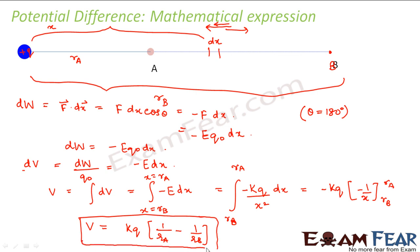So V = kq(1/r_a − 1/r_b) is the potential difference between point A and B. Notice that kq/r_a is the potential at point A and kq/r_b is the potential at B — so the difference between the potentials at A and B gives the potential difference. In textbooks, both potential and potential difference are denoted by capital V, so do not get confused — they are two different but closely related concepts.